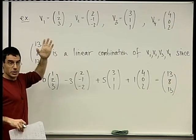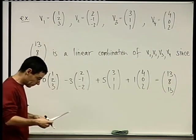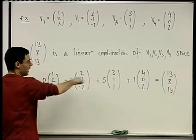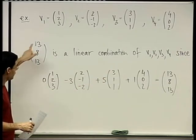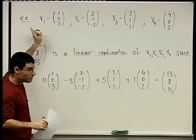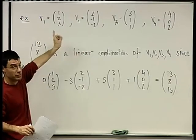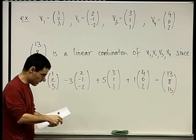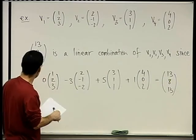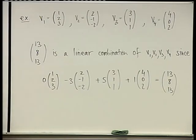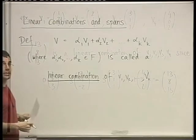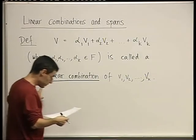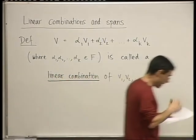So (13, 8, 13) is a linear combination of those vectors. This is not a coincidence that I took this specific vector — you have seen these before, and we'll get to that in a few minutes. But before that, I want to define the notion of a span.